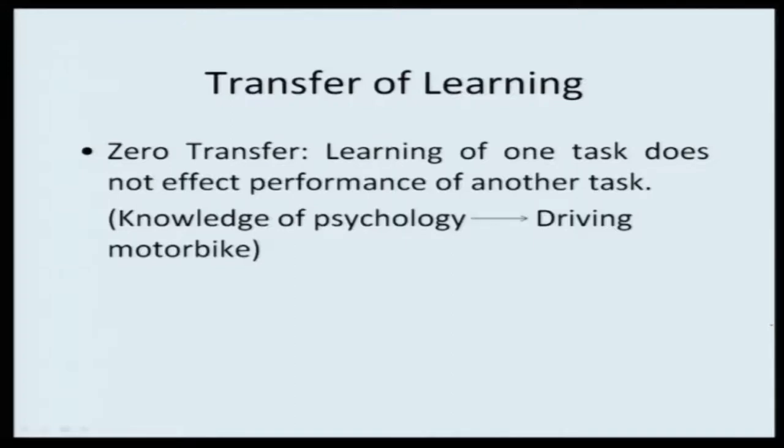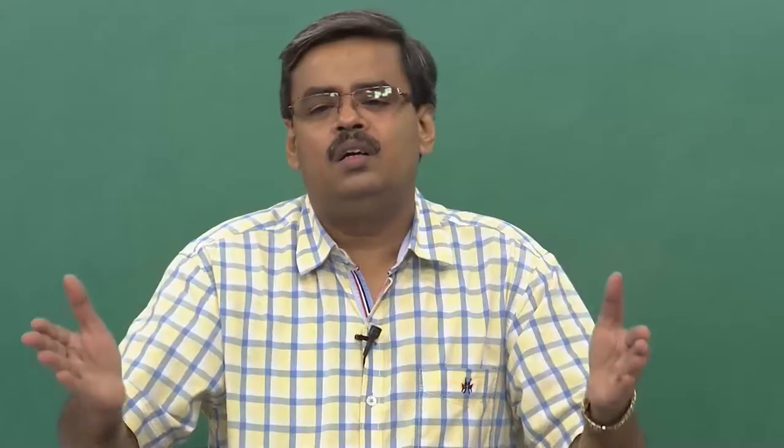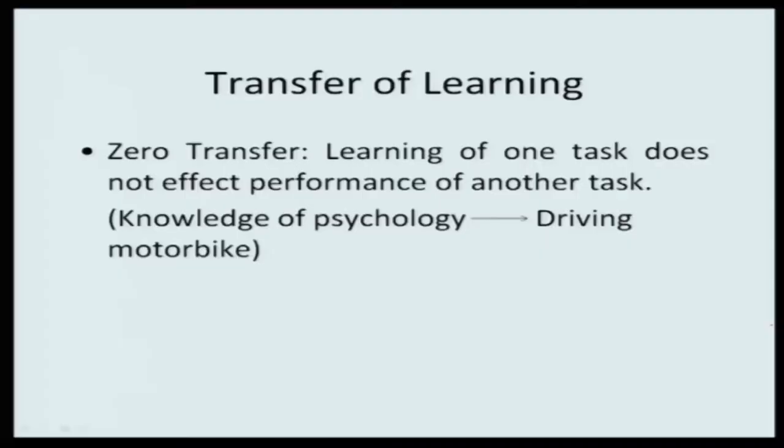Another possibility is that the previously learned thing and the new incoming thing are completely disconnected — learning one does not affect performance on the other. The best example: after attending many lectures of this psychology course, if you now have to learn how to ride a motorbike, knowledge of psychology is not going to either positively or negatively affect driving the motorbike. There is zero transfer — they are a completely different ball game. So knowledge of psychology has no relation with driving a motorbike — this is the example of zero transfer.